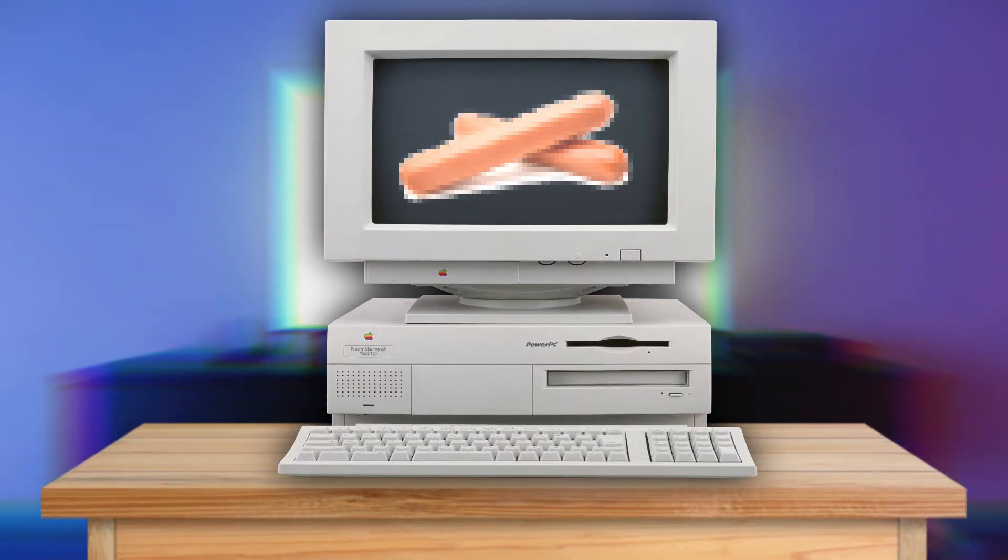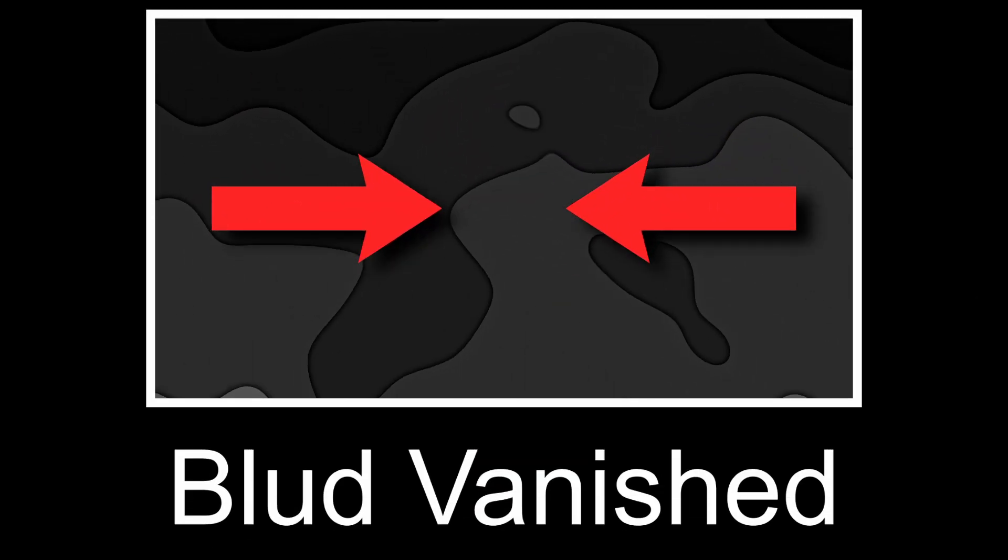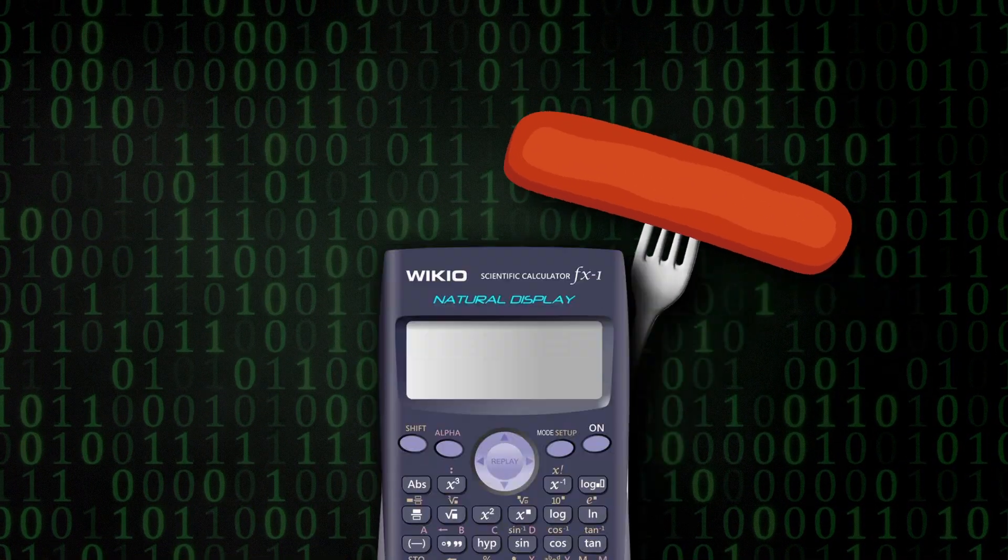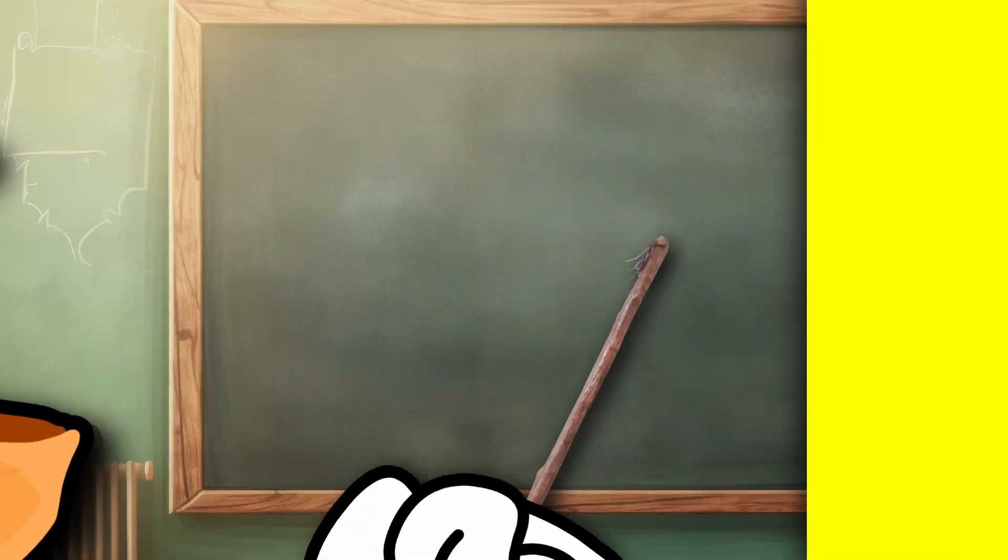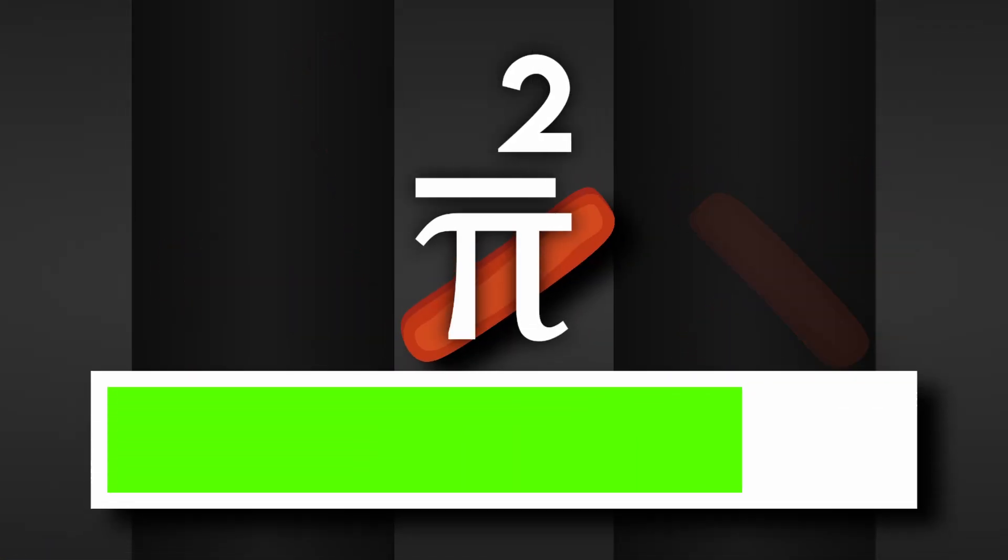It's worth mentioning, however, that the simulation is not perfect, as the ideal Buffon's needle should not have width, unlike the sausages used in our sprites. Despite this, the program shows how sausages really can be used to calculate pi. However, there is still one question to be asked. Why is the probability of landing on a line 2 over pi?